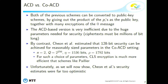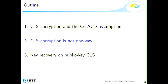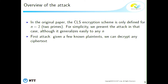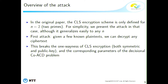Unfortunately, it's not that secure. I'll describe two of our three attacks. For simplicity I'll only consider the case of two primes, which is the one in the original paper, though in the paper we generalize to more primes. The first attack says that given a few known plaintexts, you can decrypt everything — this breaks the one-wayness of the encryption. It breaks both the symmetric and public key versions, and it breaks the decision variant of the co-ACD problem. It is based on orthogonal lattices.